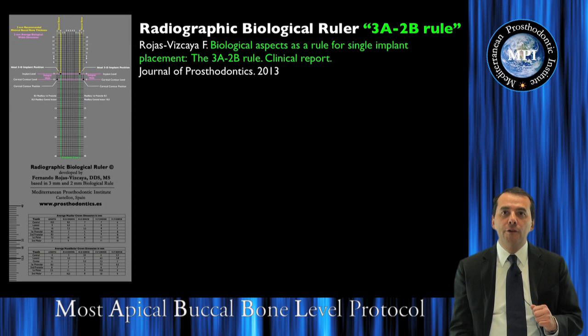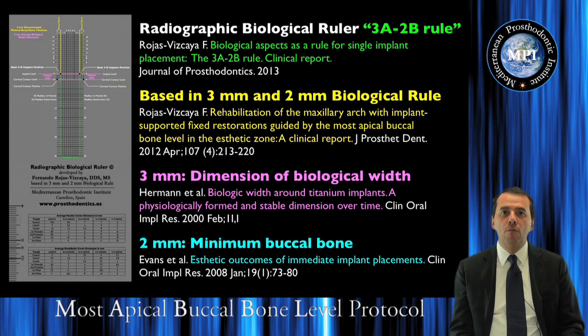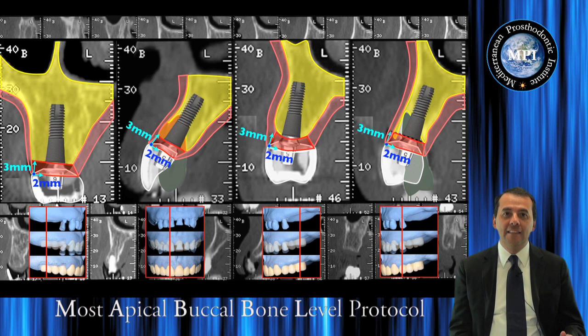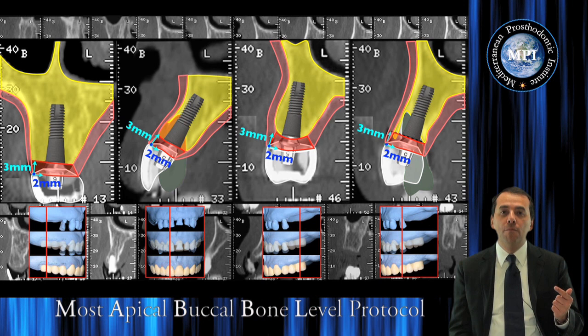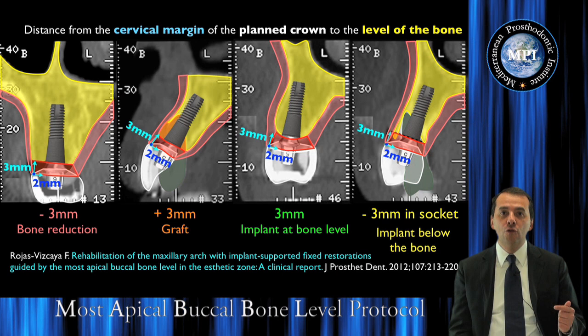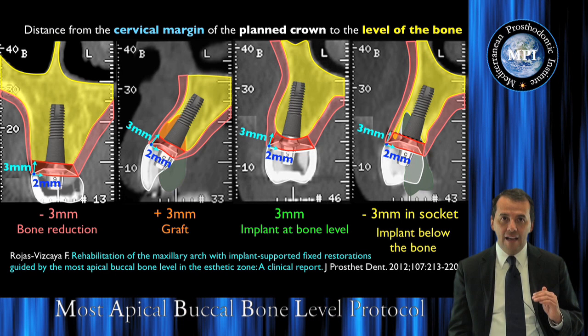In this presentation, I want to show you this 3A-to-be rule that I designed as a diagnostic tool that we can use with our tomogram, and from which information I take to design this radiologic rule. We will also see how we can make the analysis between the crown that we are planning for our patient and the existing bone.